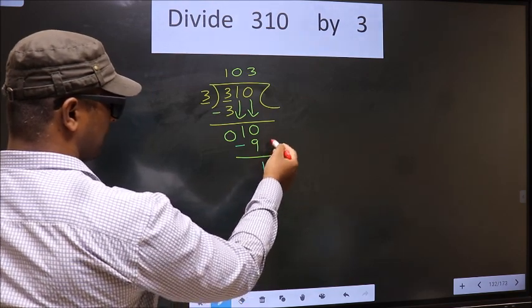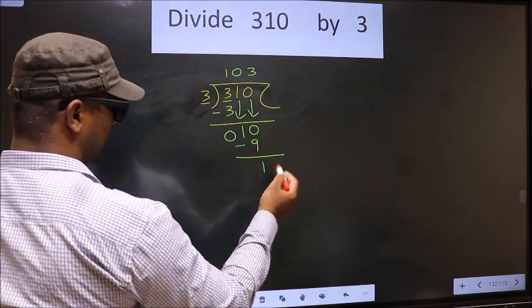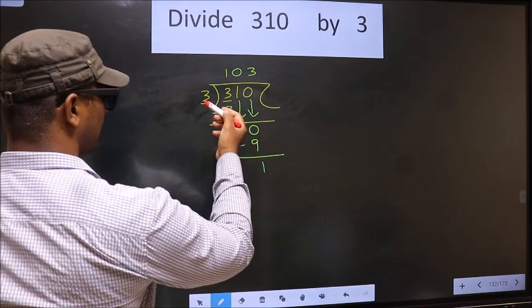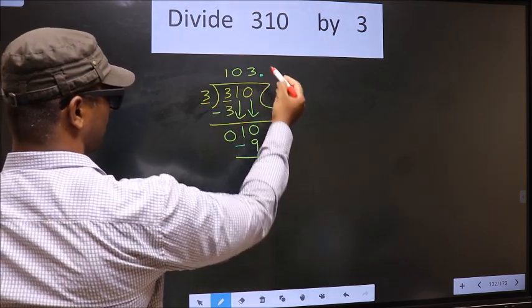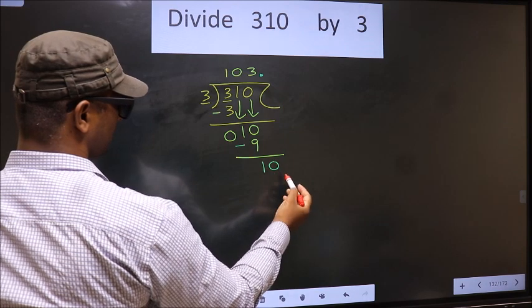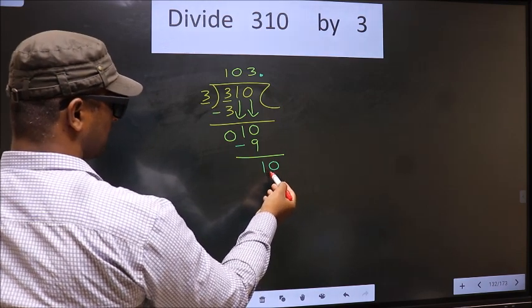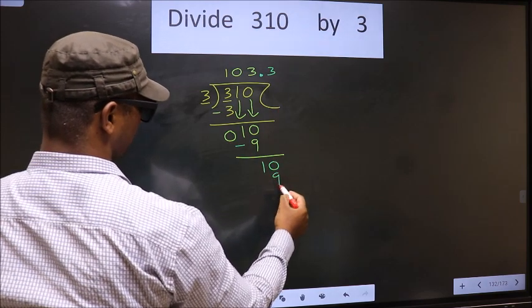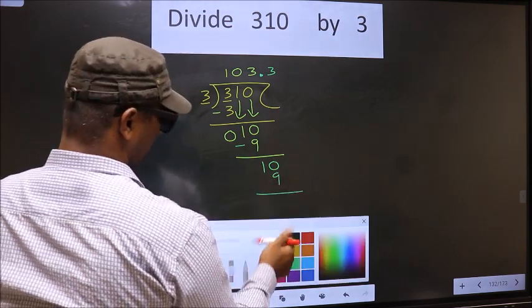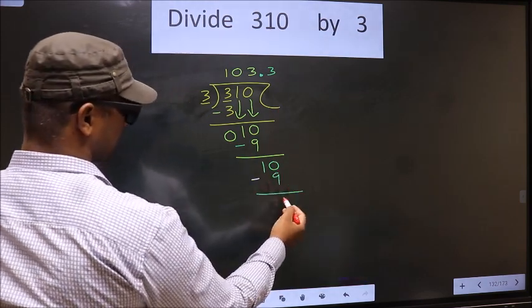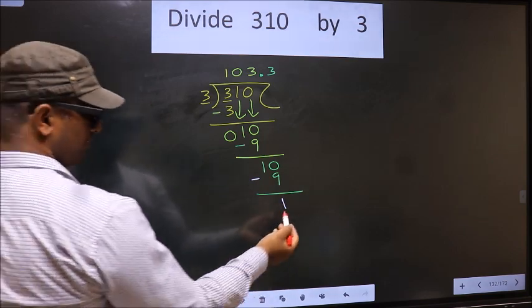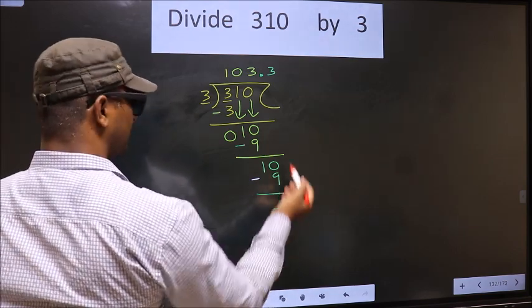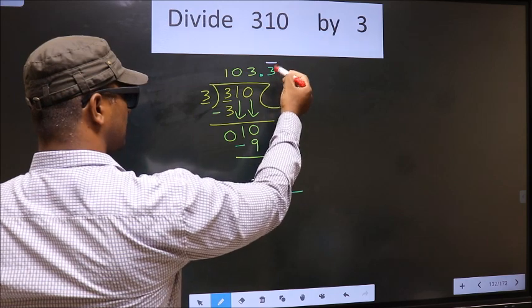The result is 1. Over here, we did not bring any number down, and 1 is smaller than 3. So you can put a dot and take 0, making it 10. A number close to 10 in the 3 table is 3 threes, 9. Subtract: 10 minus 9 is 1. We got 1 again, which means we get a bar on this number indicating a repeating decimal.